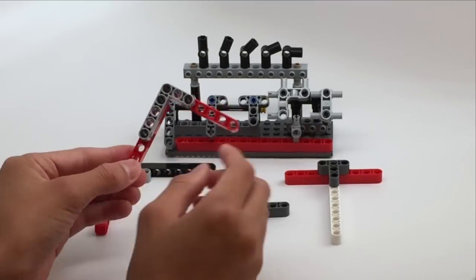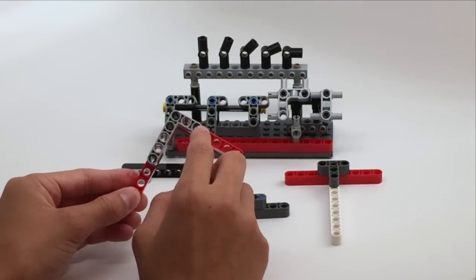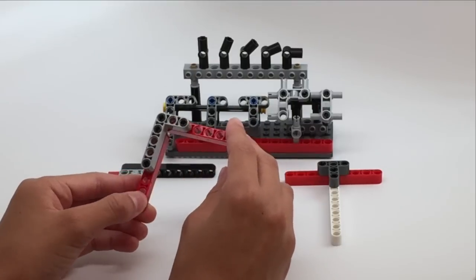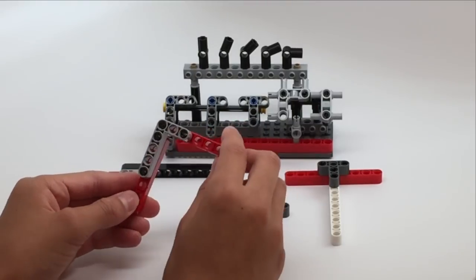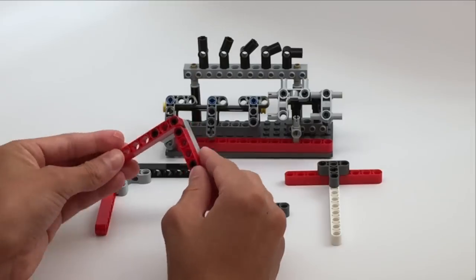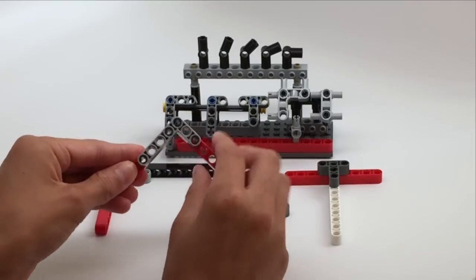The most standard LEGO angle-change piece is this right-angled 3x5 hole piece. Since it has all these technic holes, we can use these black pegs to attach it to other beams, and this is really sturdy.